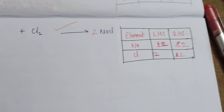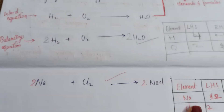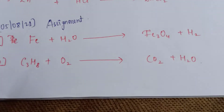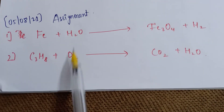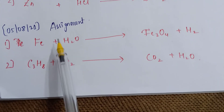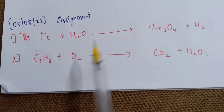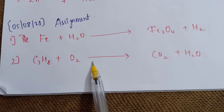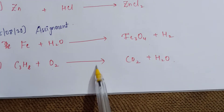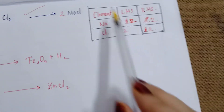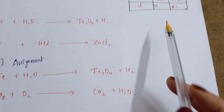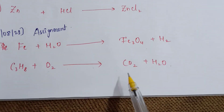Always balance your chemical equations — never leave an equation unbalanced. Students, take a screenshot of the two equations given as homework, draw the table with elements, LHS, and RHS columns, and try to balance them. Submit your homework in your groups if possible. Thank you, students — have a nice day.